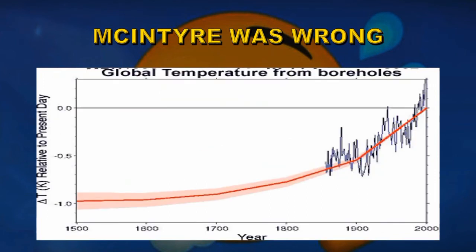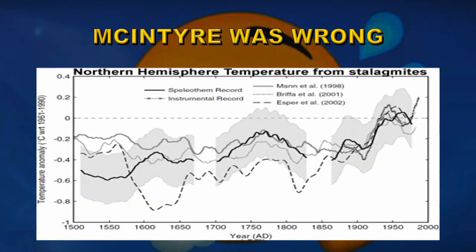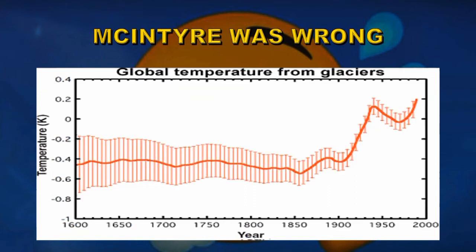If you look at other types of data — here's the data for boreholes — it shows a distinct hockey stick shape. Same for the results from stalagmites and the results from glaciers. So the result of a hockey stick shape is because the data is actually showing that the Earth in the last hundred or so years has been warming more rapidly than before, producing a hockey stick shape.